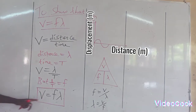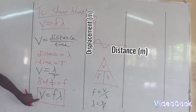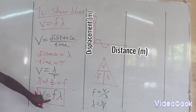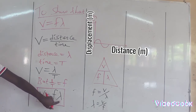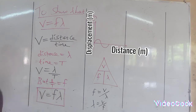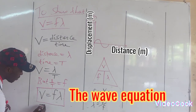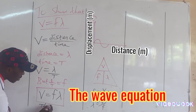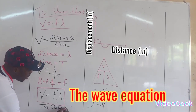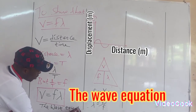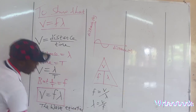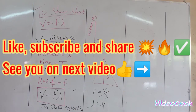So viewers, we have been able to show that the velocity of a wave is given by the frequency of the wave multiplied by the wavelength of the wave. This is known as the wave equation. Thank you.